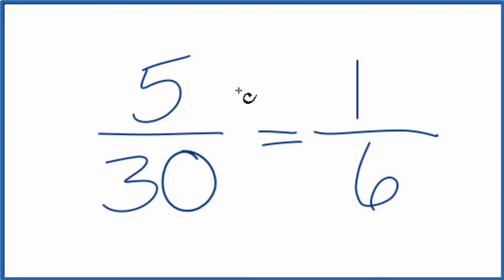We have reduced the fraction 5 thirtieths down to 1 sixth. These are equivalent fractions, which is why we have the equal sign there. They have an equal value. If you divided 5 by 30 on your calculator, and 1 by 6, you'd get the same number.